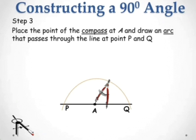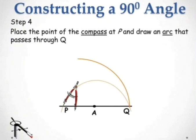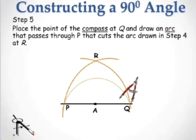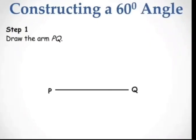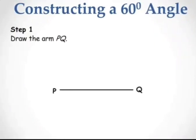Place the point of the compass at P and draw an arc that passes through Q. Place the point of the compass at Q and draw an arc that passes through P, cutting the arc drawn in step 4 at R. Using a ruler, join A to R. So the angle ARQ is 90 degrees — this is the required angle.